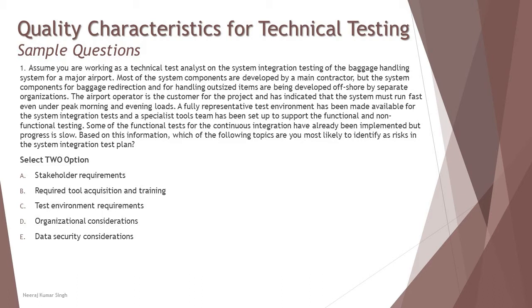To understand each option, you need to pick up the justification from the scenario and derive an outcome that gives you the best answer. Option A is including the stakeholder requirement, which is the first and foremost consideration. When they talk about the performance requirement, the airport operator simply states the system must run fast under peak loads — 'run fast' is a vague requirement, because you are looking for a specific response time.